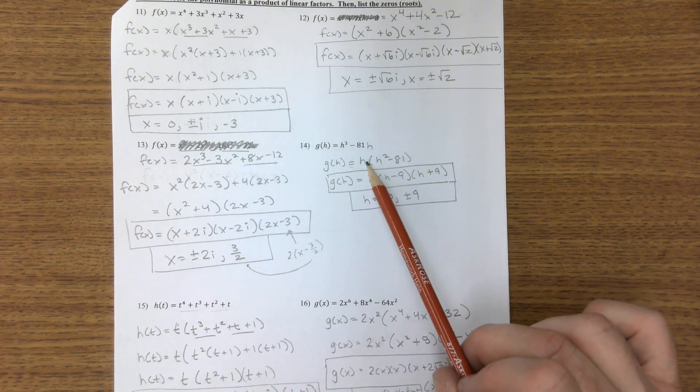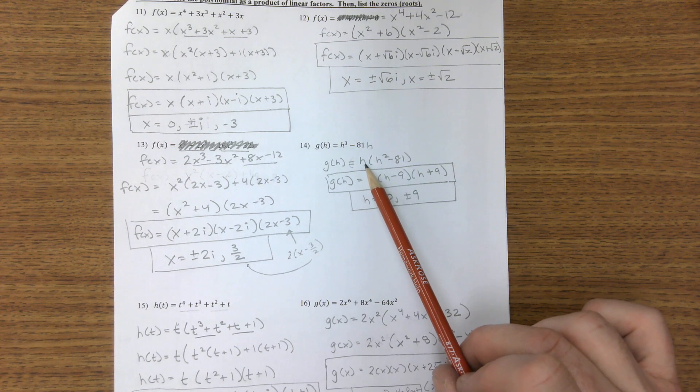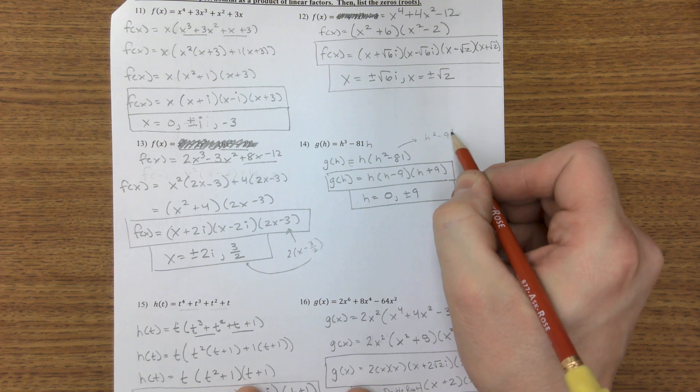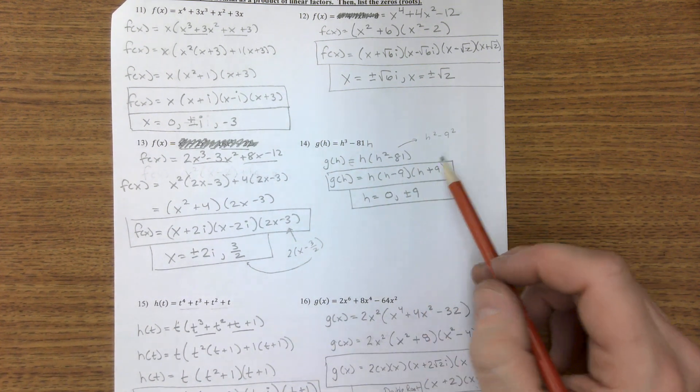Factor it out an h here, and then this is a difference of squares because this can be written as h squared minus 9 squared, which is minus 9 plus 9.